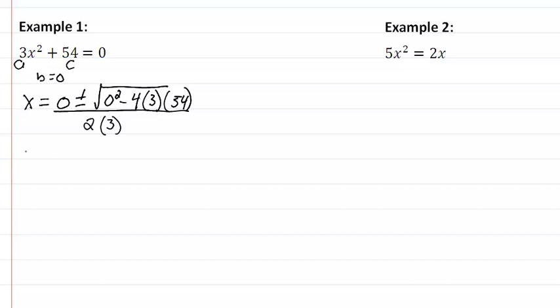So we're going to get x equal to plus or minus the square root of negative four times our three times our 54 giving us a negative 648 all over six.